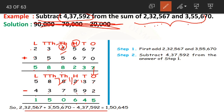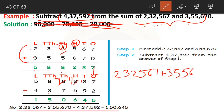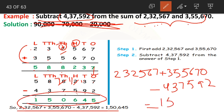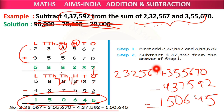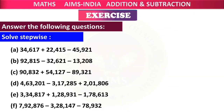To represent it as an equation: first we added both numbers, and then from this sum we subtracted 4,37,592, which equals our final answer 1,50,645. This is not something new — addition and subtraction we have been doing since the first class. Here we have just combined both together: first we added and then we subtracted from the sum.